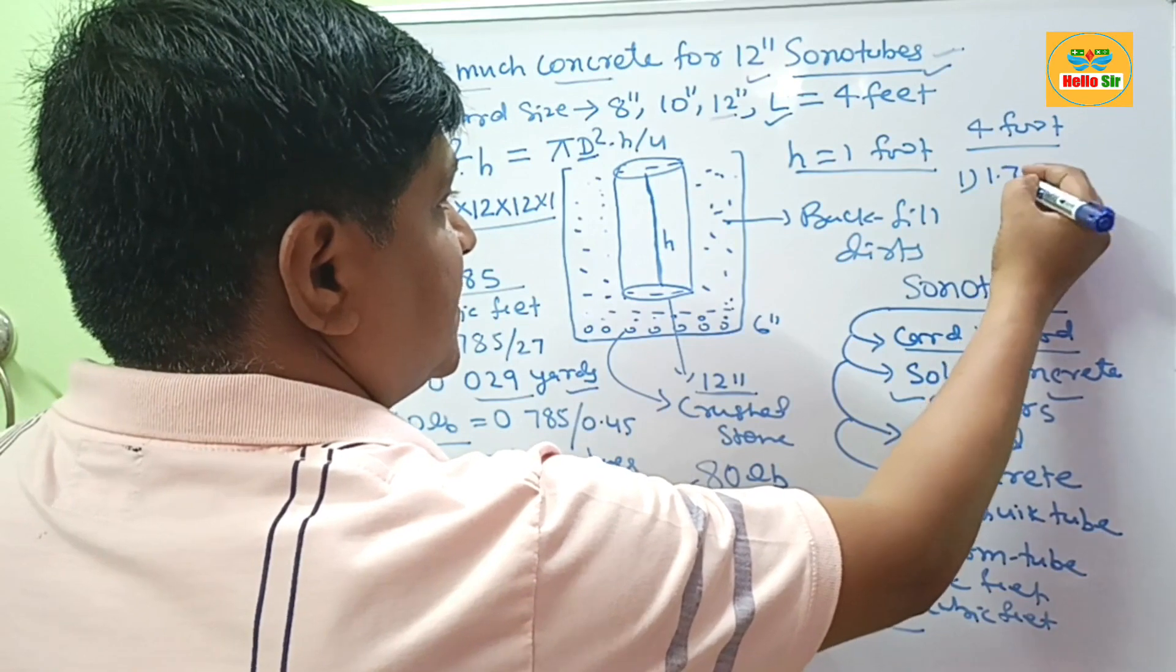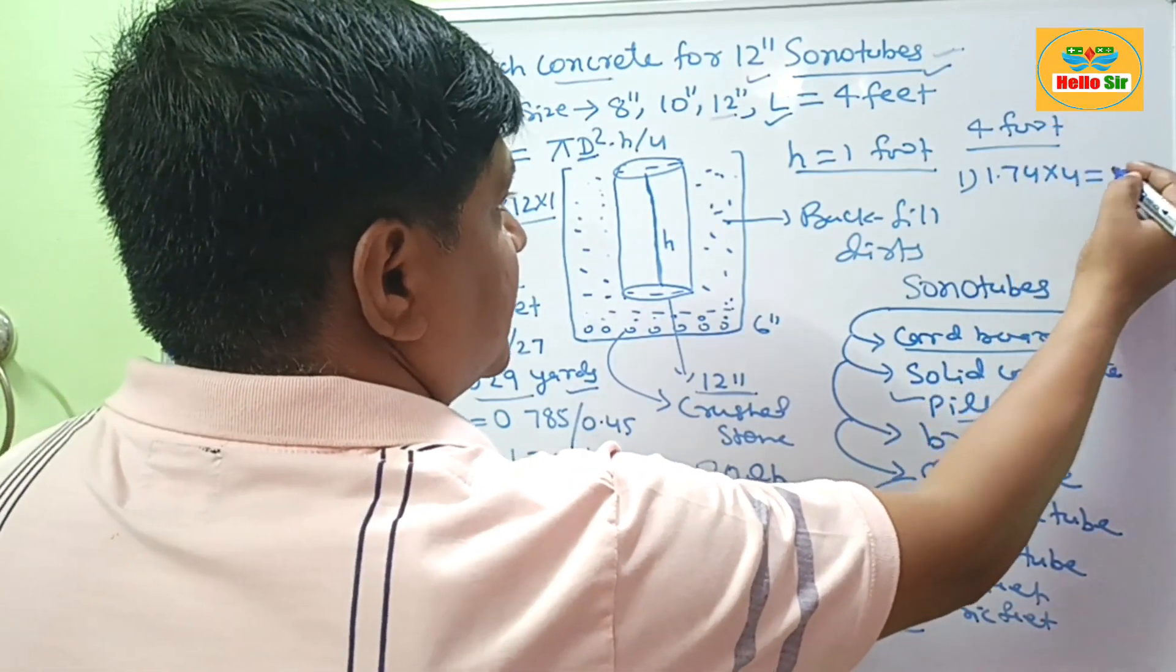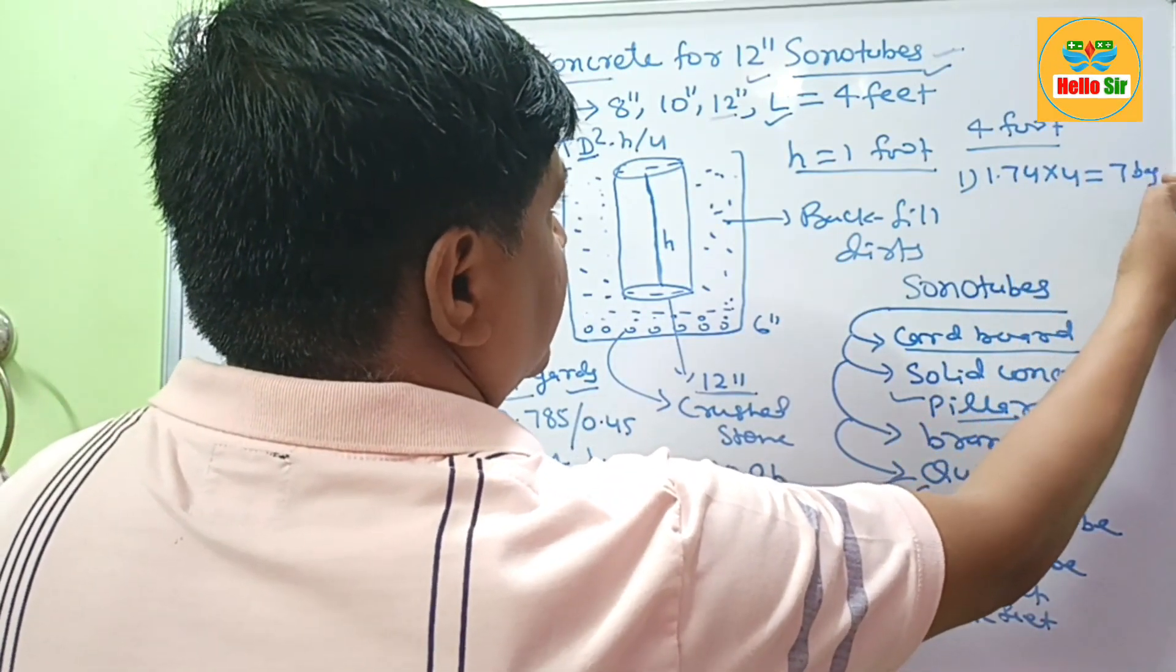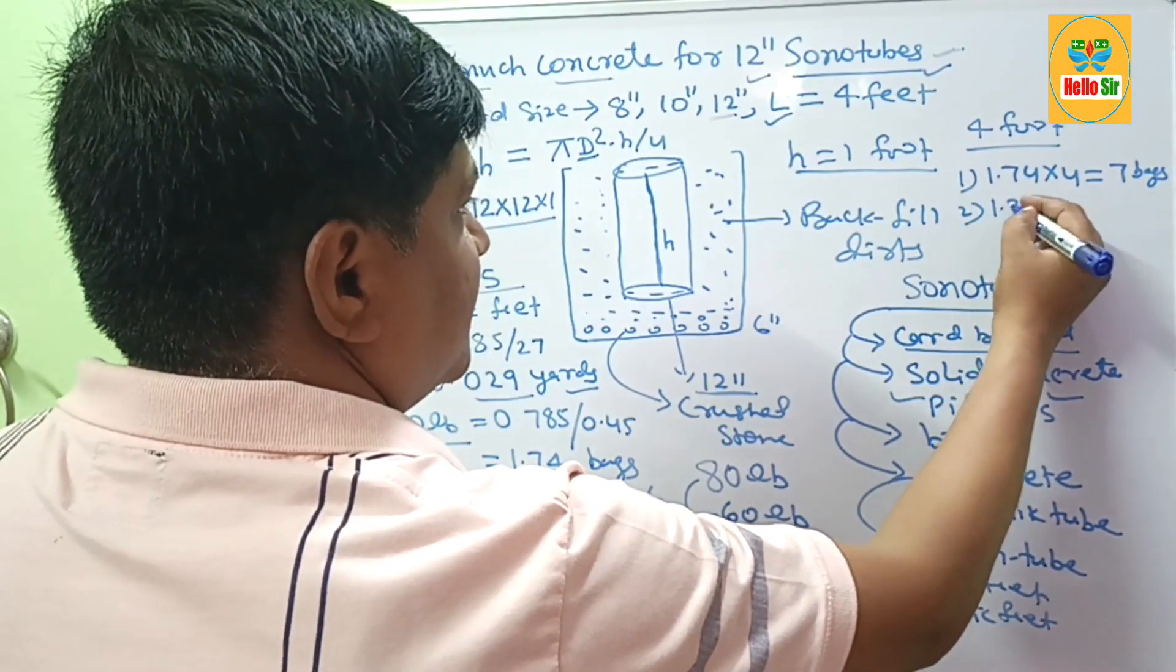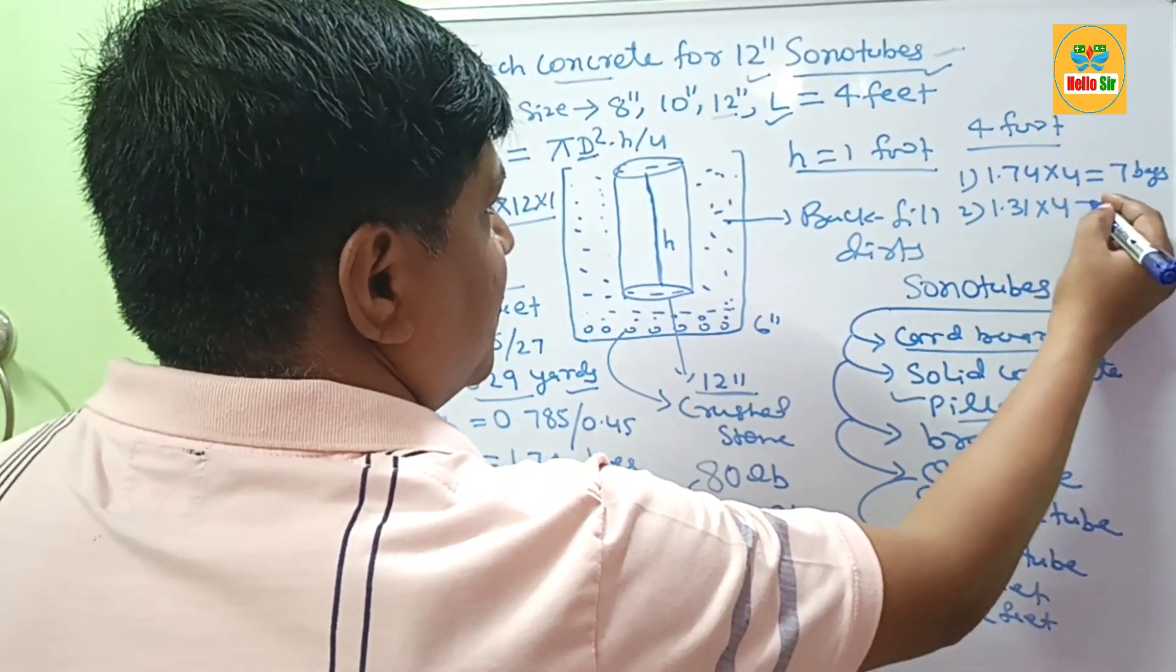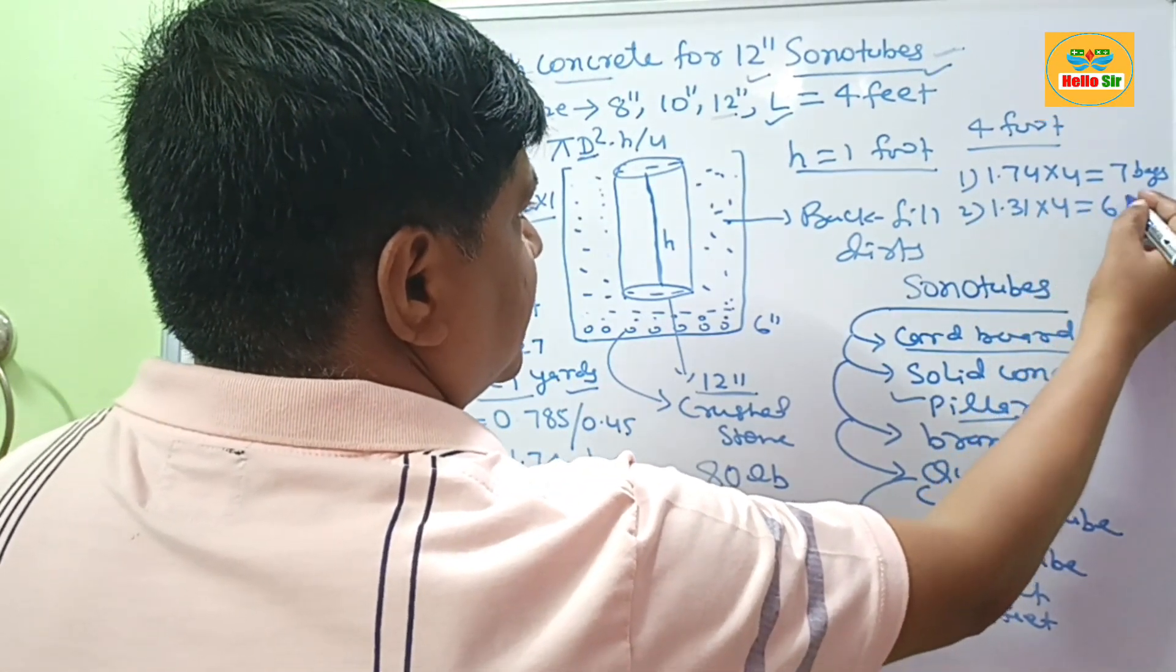And if you want to find the 60 lb bags and 80 lb bags for 4 feet, multiply 1.74 into 4, this will be about 7 bags. And 1.31 multiplied by 4, this will come to about 6 bags.